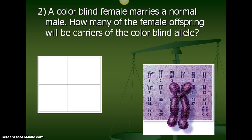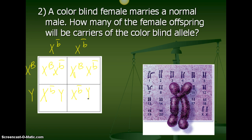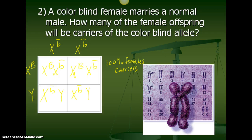Problem two: a color blind female, X little b, X little b, marries a normal vision male, X big B, Y. Go ahead and pause and check what you have. How many of the female offspring will be carriers of the color blind allele? 100% of the females are carriers because that's the only allele their mom could pass — dad gave the good gene, so they're not color blind. The boys are all color blind because the mom can only pass a color blind gene and the dad is only passing the Y chromosome, not his good color vision gene.